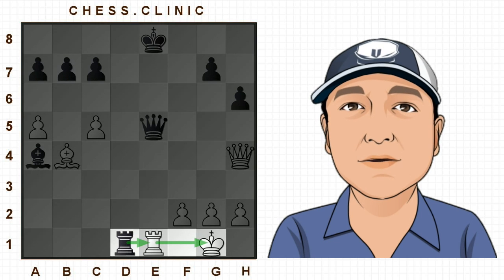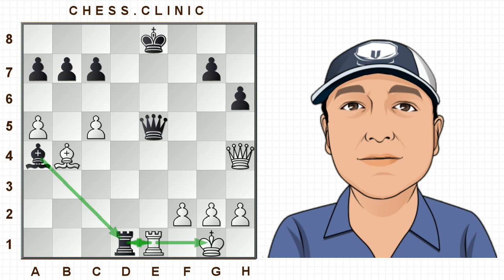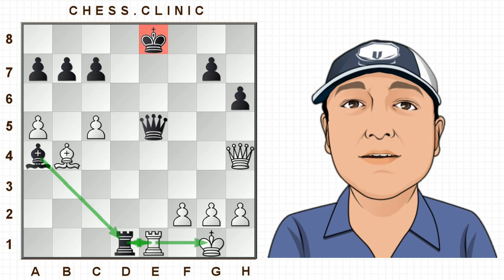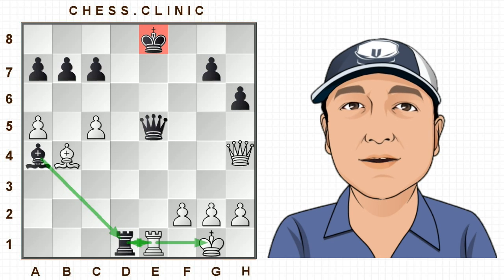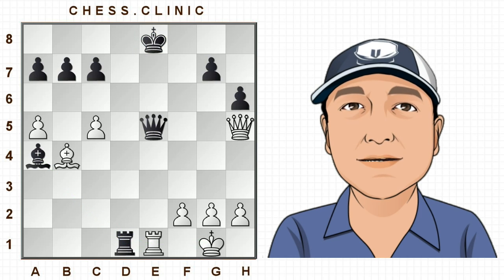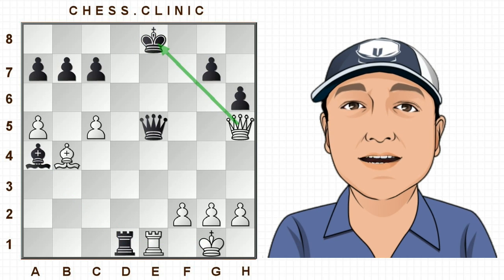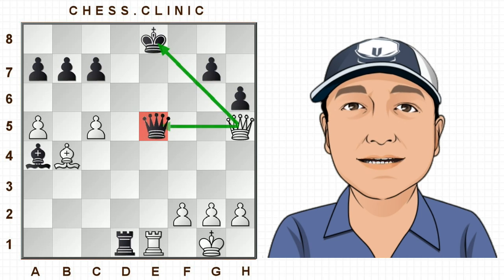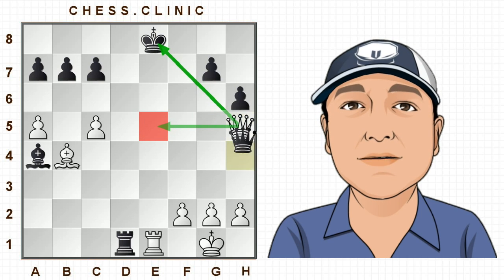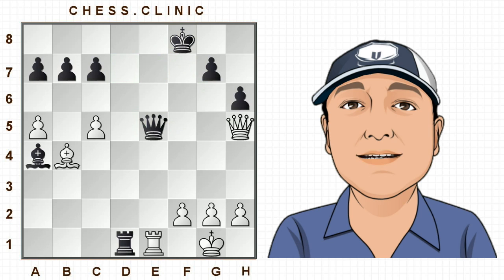Obviously if we take the rook he takes back with the bishop and we gain nothing, but that king on e8 is too exposed and we can exploit this with queen to h5 — a check. The queen is overloaded now; the queen can't take because the king would be in check, and that means when the king moves out of the way we can simply take the queen for free.